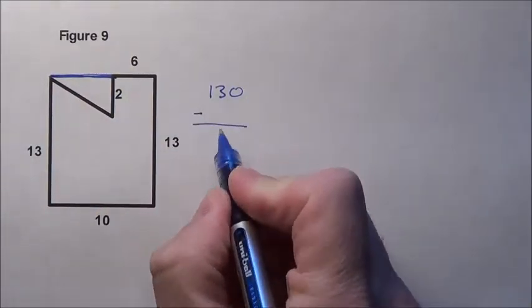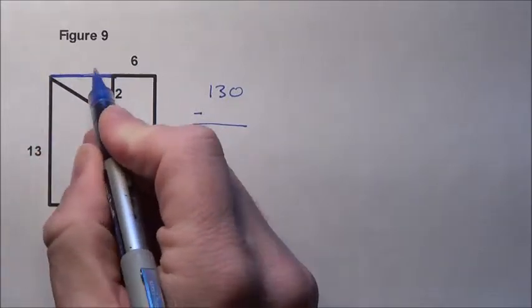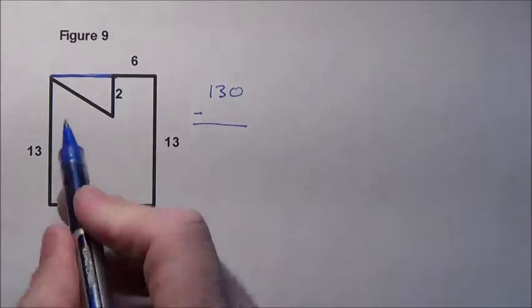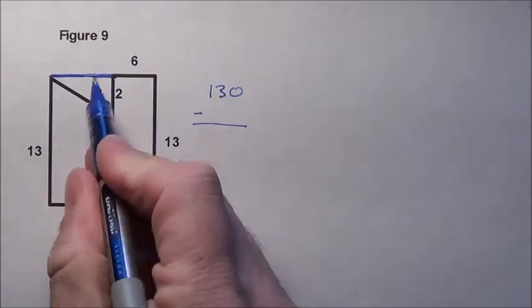Well, all I need to do now is come back and subtract this part that I don't really have from the 130. So imagine that it's closed, the area of the whole thing is 130, and then I just subtract this part that's really not there.